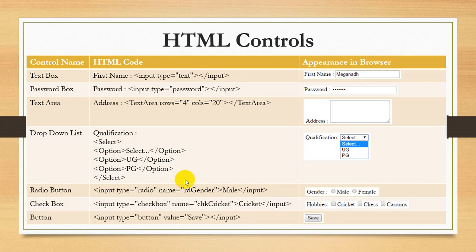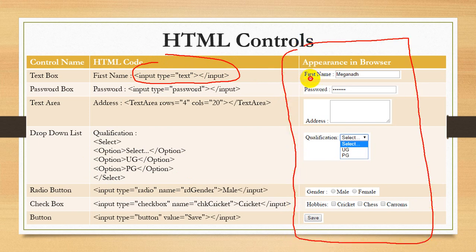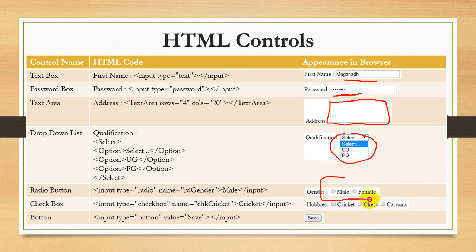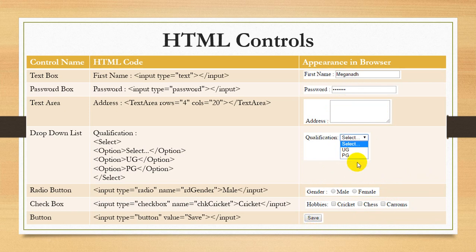Now we will see some of the most commonly used controls in HTML. In most websites, these are the input controls we use. This is a text box — in application forms you see something like this, first name followed by a text box. This is a password box — when typing something you will see dots. This multi-line text box is called text area. This is a drop down list. This is a radio button. This is a check box. And this is a button.